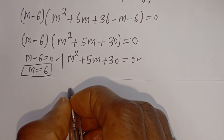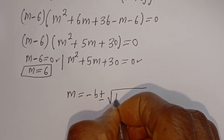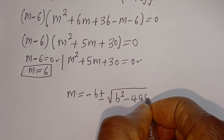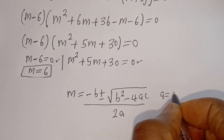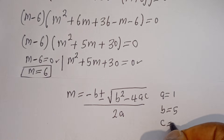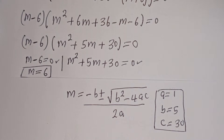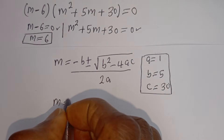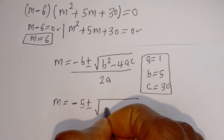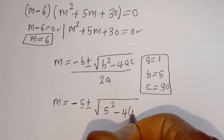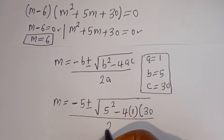From this second case, our quadratic formula is M equals negative b plus or minus square root of b squared minus 4ac, over 2a. From this equation, a equals 1, b equals 5, c equals 30. So M equals negative 5 plus or minus square root of 5 squared minus 4 multiplied by 1 multiplied by 30, divided by 2 multiplied by 1.